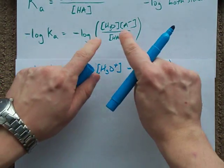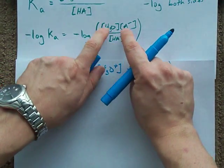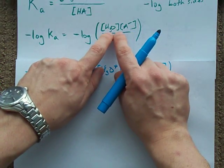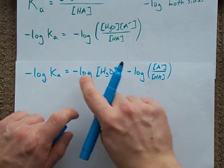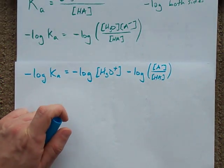We're breaking up the thing that we're taking the log of into the sum of two separate logs. But, because we have a negative out front, that negative gets distributed, and so it's two minuses.